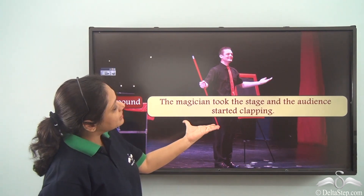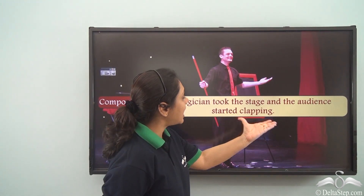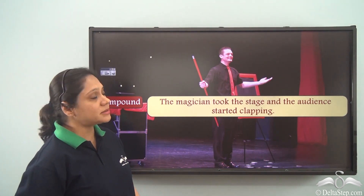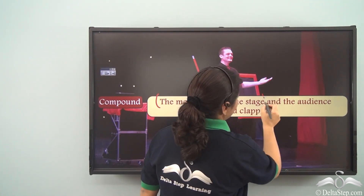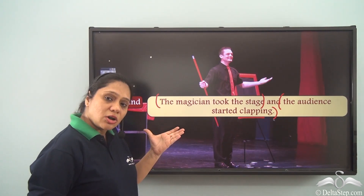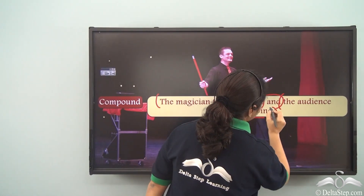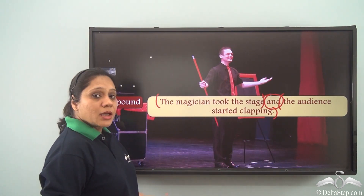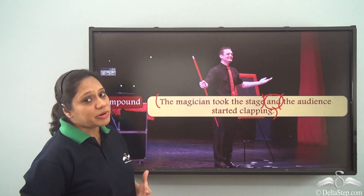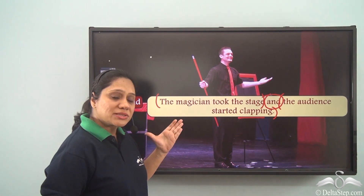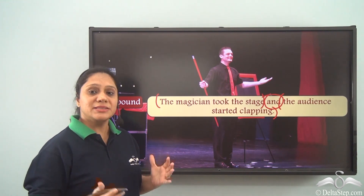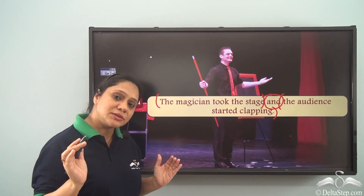'The magician took the stage and the audience started clapping.' This is a compound sentence made up of two independent clauses: 'The magician took the stage' and 'The audience started clapping,' joined by the coordinating conjunction 'and.' To change this to a complex sentence, one clause will be changed to a subordinate clause while the other remains the main or independent clause.